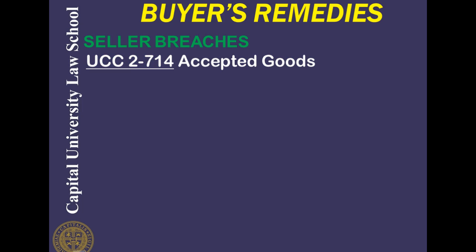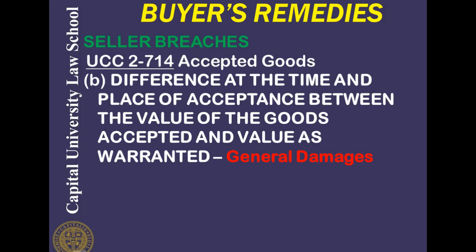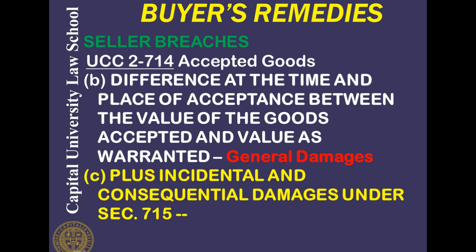Section 2-714 covers accepted goods — when there has been a breach but the buyer accepts the goods. The damage is the difference at the time and place of acceptance between the value of the goods as accepted and the value as warranted, meaning what was contracted for. So if the buyer accepts and repairs non-conforming goods, the damage is the difference between actual value and warranted value, plus incidental and consequential damages under Section 2-715 in certain circumstances.